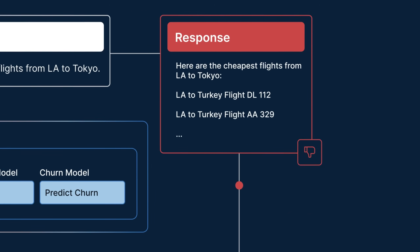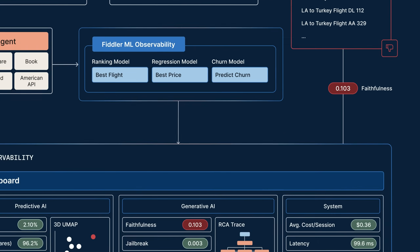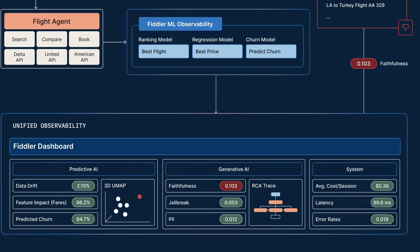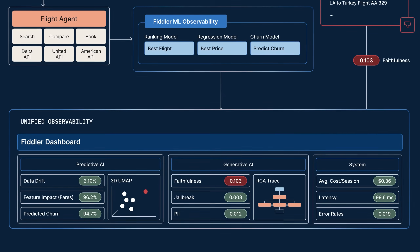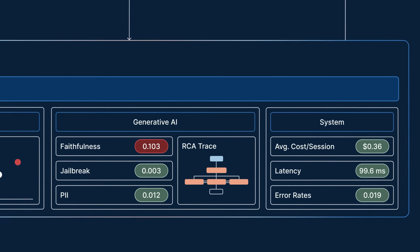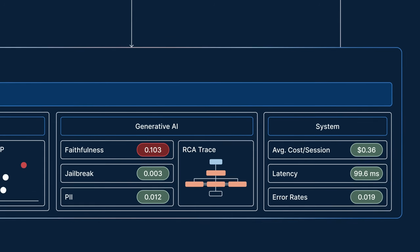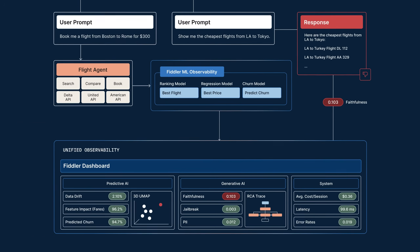Each response is monitored and scored, so you know exactly what went wrong. Fiddler rolls up metrics into a single, unified view. These dashboards give you the visibility to prevent cascading failures and conduct hierarchical root cause analysis to address risks effectively.